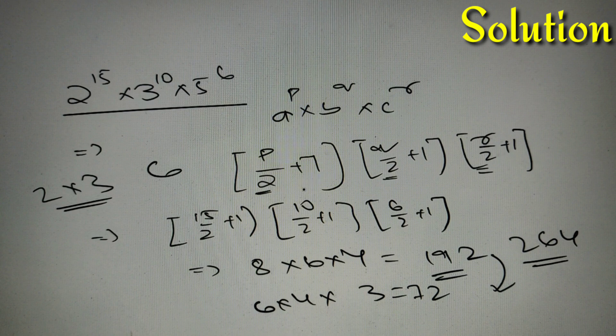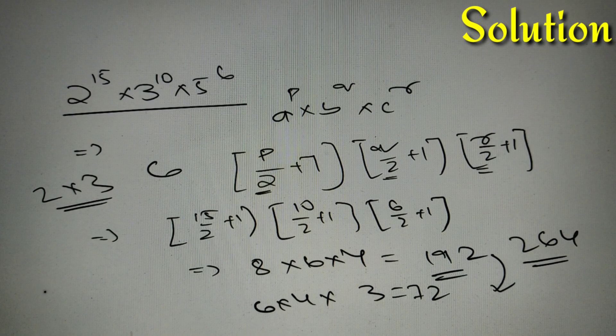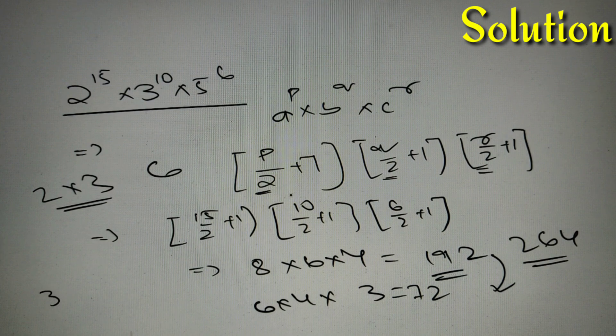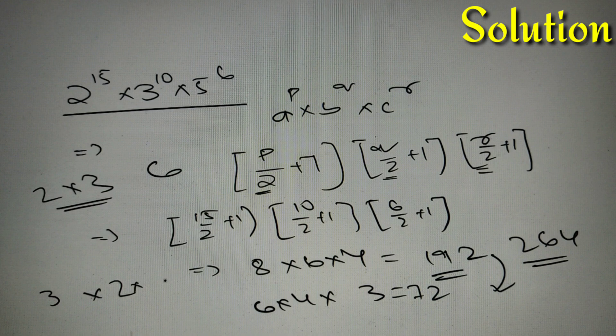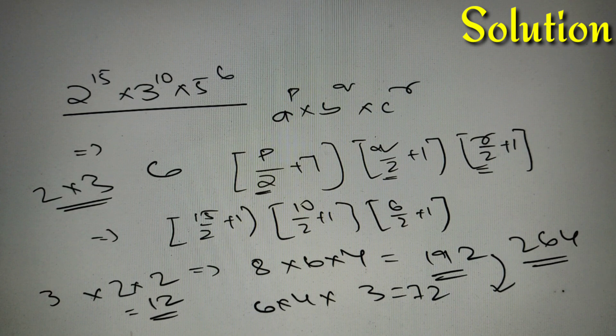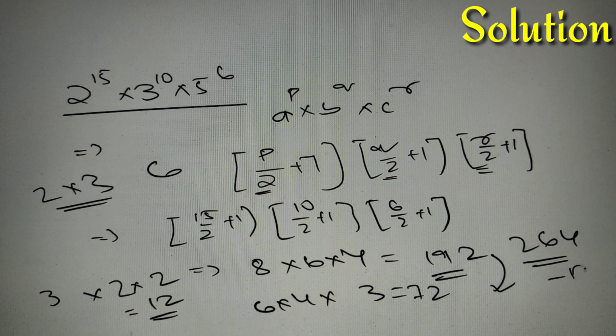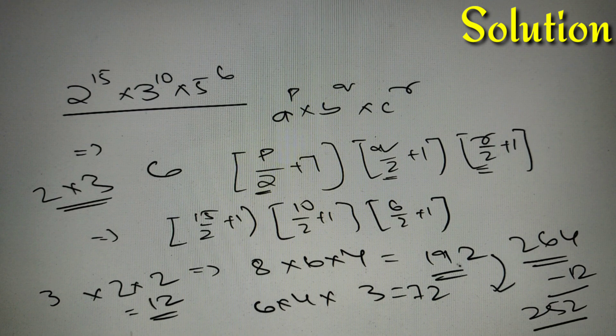For that we'll write 6 in the denominator. So we'll have 15 by 6 plus 1, which equals 3 in the greatest integer function, then 10 by 6 plus 1, which gives us 2, and 6 by 6 plus 1, which again gives us 2. The final answer for that will be 12, and we have to subtract 264 with 12. So our final answer for this question is 264 minus 12, that is 252.